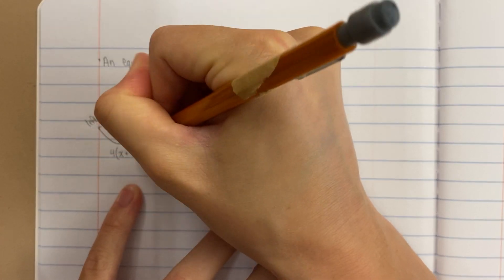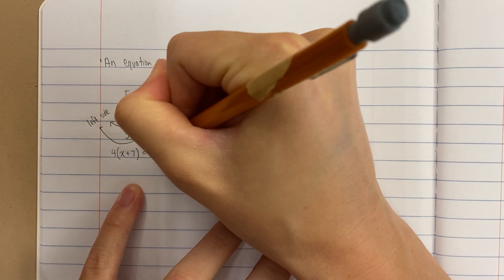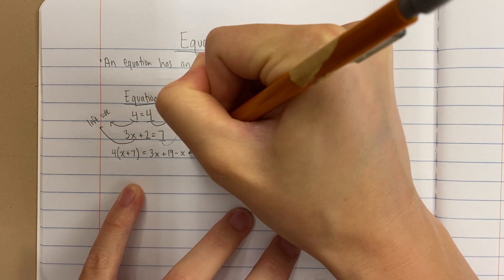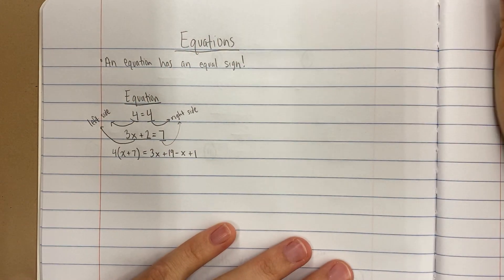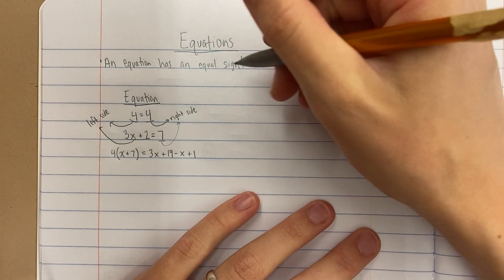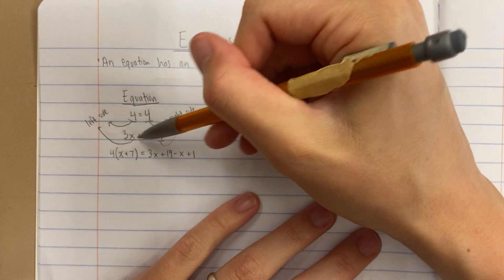You can have longer equations: 4 times the quantity x plus 7 equals 3x plus 19 minus the quantity x plus 1. Still an equation, still has a left side and a right side.